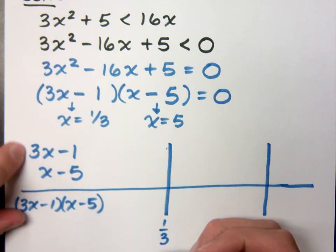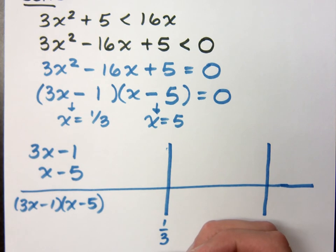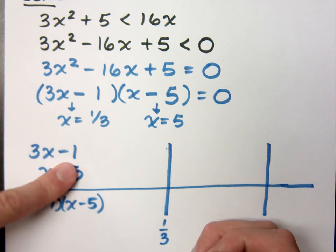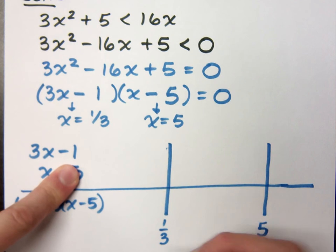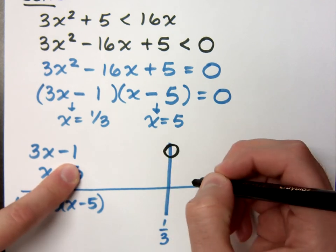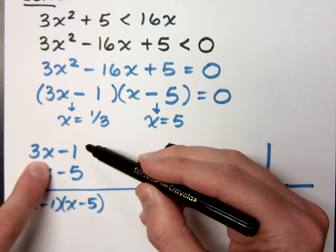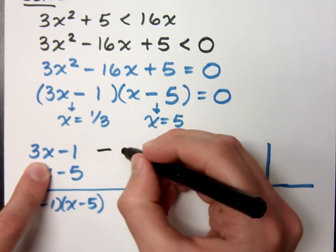When you have linear factors with a lead coefficient that's positive, that means on the left side of their critical value, it's negative. And on the right side, it's going to be positive. So 3x - 1, when does this equal 0? He equals 0 right here at 1/3. If you were to plug in values on the left side of this, like 0, -1, -2, you would get just negative values here.